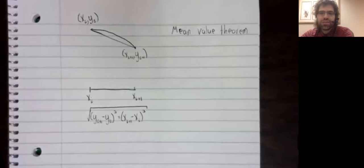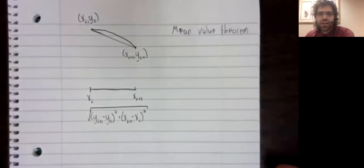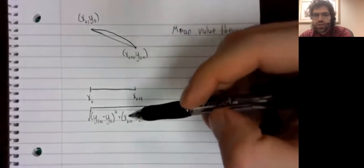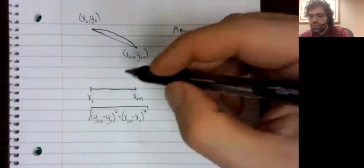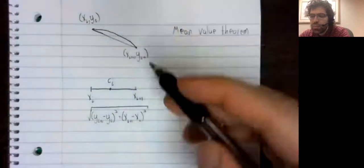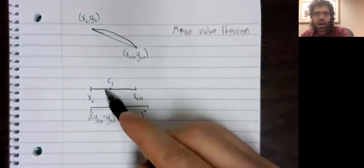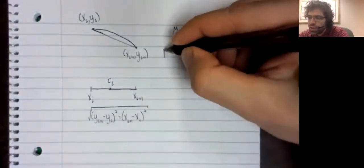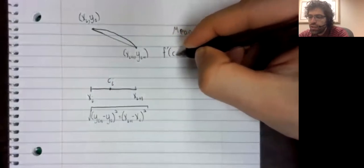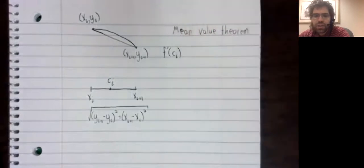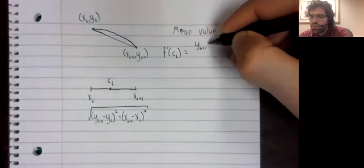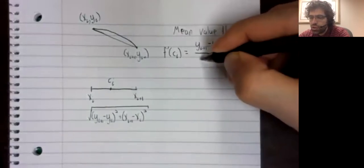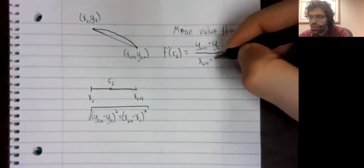So that's a blast from the past. We discussed the mean value theorem all the way back in calculus one. And what this says is that as long as our curve is nice and continuous, we can find some number c sub i in this interval such that the derivative at c sub i, the exact rate of change, equals the average rate of change.